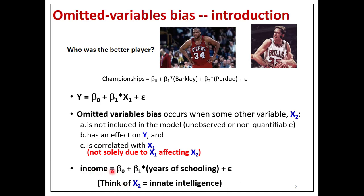For example, if you're trying to estimate how years of schooling affects income and the omitted factor is innate intelligence — innate intelligence is really non-quantifiable, so it's not in the model. It probably does affect income, and it's probably correlated with years of schooling — not because education affects innate intelligence, but probably the other way around. So years of schooling would be getting credit for the effects of innate intelligence.